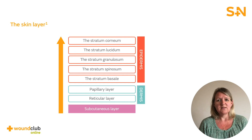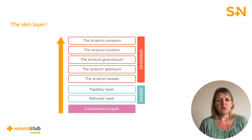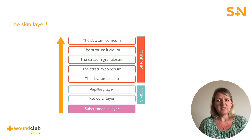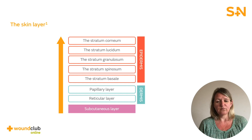The stratum lucidum is a layer found in areas such as the palms of the hands and soles of the feet where the skin is thicker. This layer provides some degree of waterproofing to the skin. The stratum corneum is the outermost layer and consists of 25 to 30 layers of flattened dead keratinocytes. The cells contain keratin, a protein which helps protect the skin and underlying tissues from microorganisms, chemicals and heat. Cells undergo mitosis in the stratum basale and migrate upwards through each level until they are shed at the stratum corneum. This process takes place over a 28-day cycle.